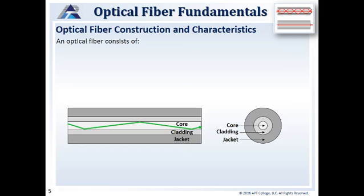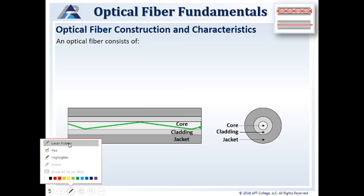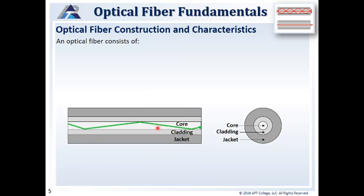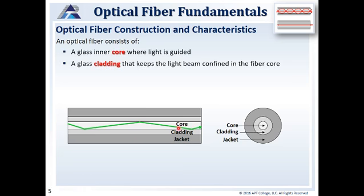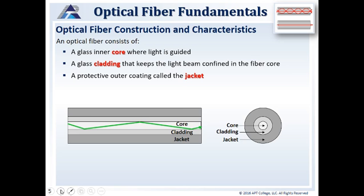This is the basic construction of an optical fiber. We have a glass inner core, with glass cladding going around that. The cladding helps to keep the light confined to the core. Surrounding that, we have our primary buffer and our jacket, which help to protect the glass. The primary buffer is usually an acrylate and the jacket is PVC or polyethylene.